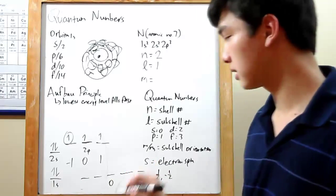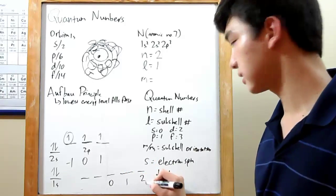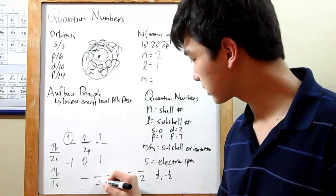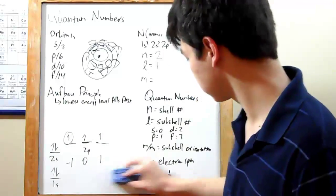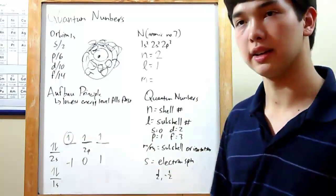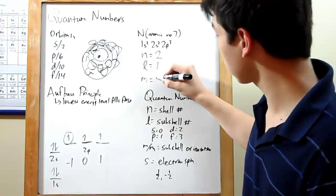So let me show you a d orbital, which has 5 lines. Your middle line is 0. To the right, you have 1, and then your next line is 2. To the left, your first line is negative 1, and then negative 2. But back to our p orbital here. Our electron is in the negative 1. So negative 1 for our m.